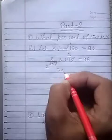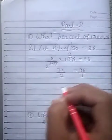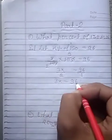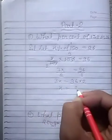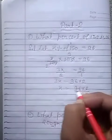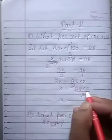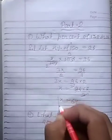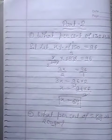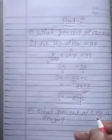3 multiply by x, 3x by 2 is equal to 96. Applying cross multiplication, 3x is equal to 96 into 2. x is equal to 96 into 2 upon 3. 3 threes are 9, 3 twos are 6. And x is equal to 32 multiply by 2, we get 64. That means 64 percent.